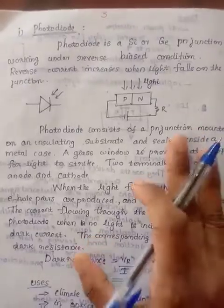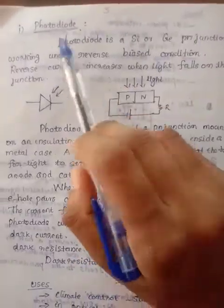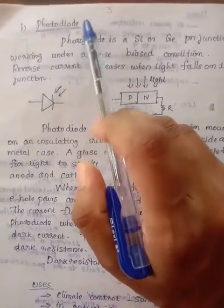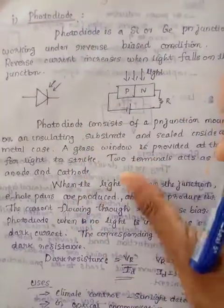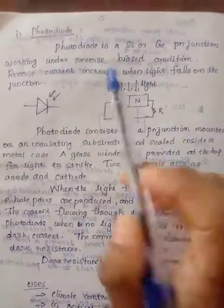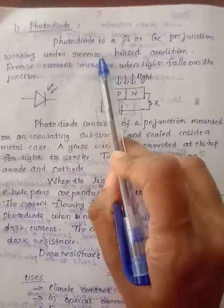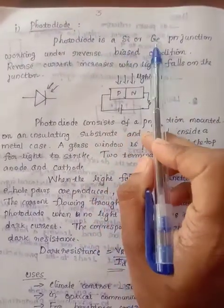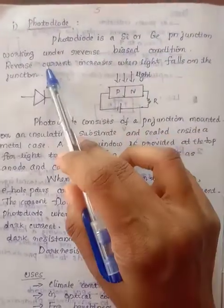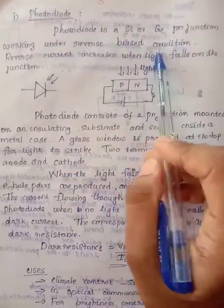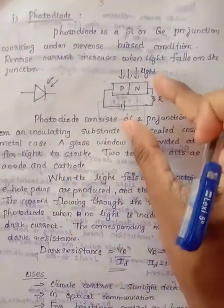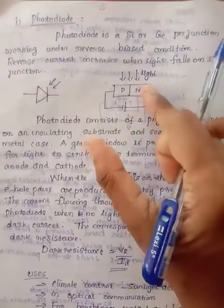The first category of photo detectors is the photo diode. A photo diode is a silicon or germanium PN junction diode working under reverse biased condition.